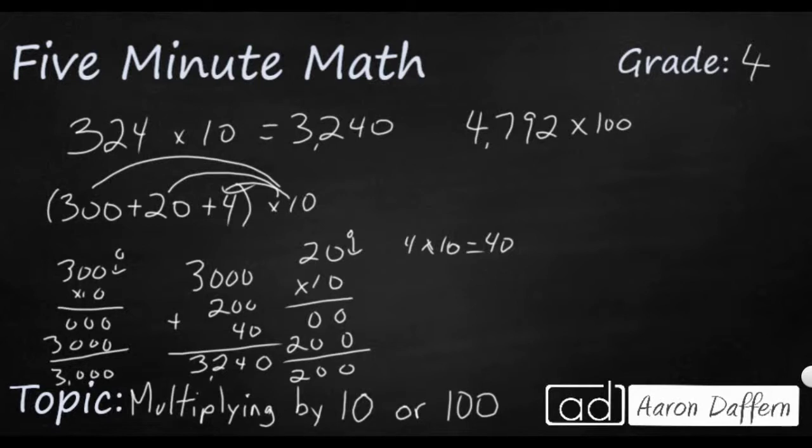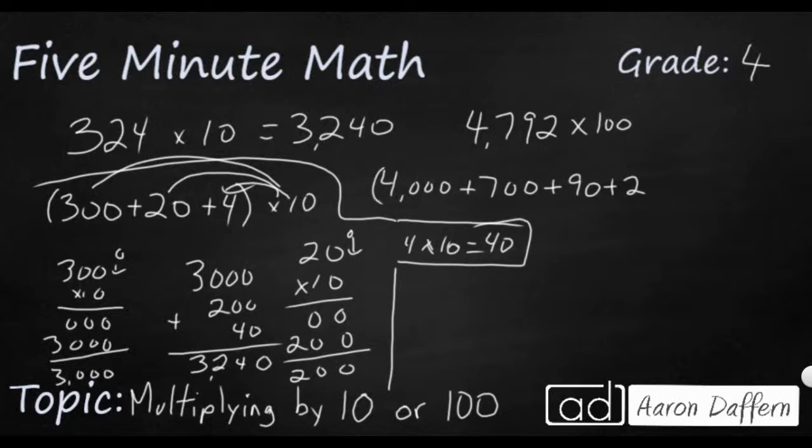Well, let's do our multiplication real quick. So let's make a little space here. So we're going to break this down into 4,000 plus 700 plus 90 plus 2. We're going to multiply all that times 100, one spot at a time.